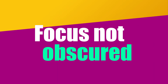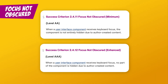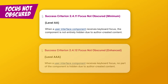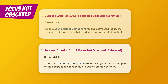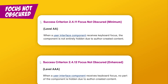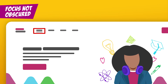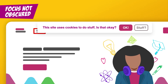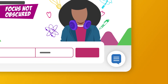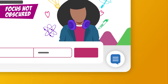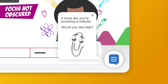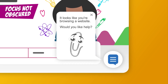4. Focus Not Obscured. How much is too much? There are two separate criteria here. One is the AA version that allows for partial obscuring, and the other is AAA and doesn't allow any. As it isn't defined, I would say it's about clarity of purpose — if I can't tell what I have in focus, it fails. This happens a lot with cookie banners. Chat widgets also take up space, so make sure you've thought about where it is and how it might obscure the page at each breakpoint, even if you don't have it open automatically.